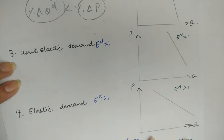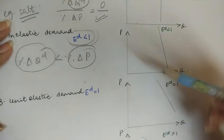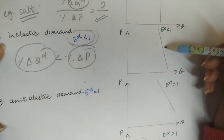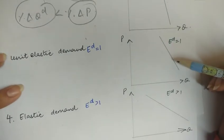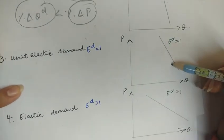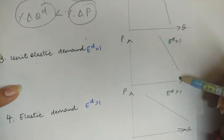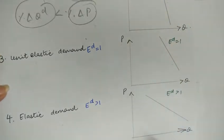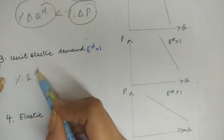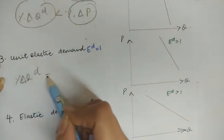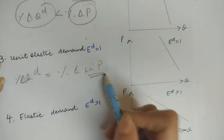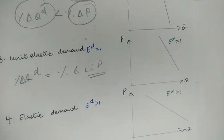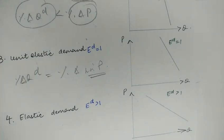Now we talk of unit elastic demand, where the elasticity of demand is equal to one. The curve is a little flatter than the inelastic demand diagram. Here the percentage change in quantity demanded is exactly equal to the percentage change in price of the commodity. In such a situation, the commodity has unit elastic demand.